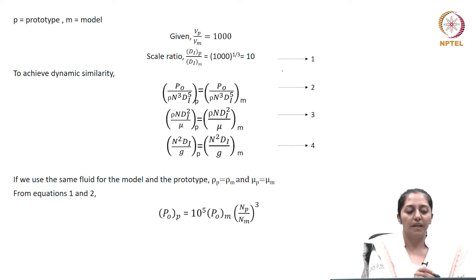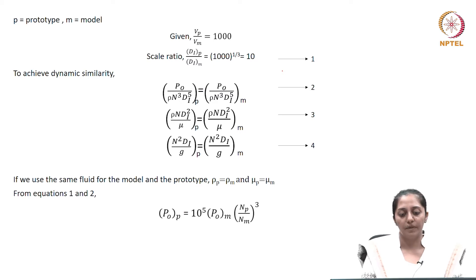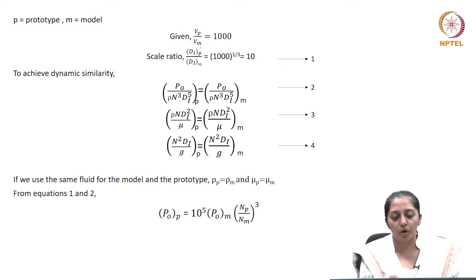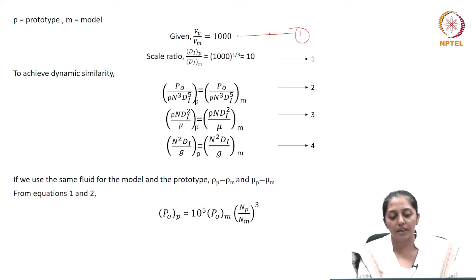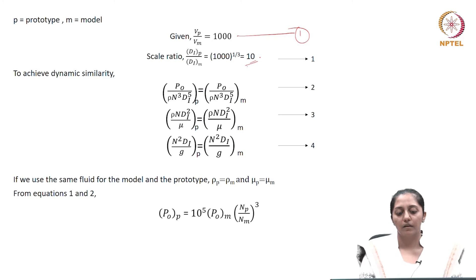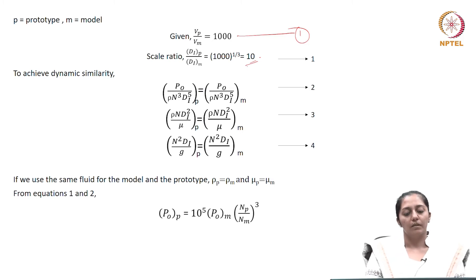We will mark P as the prototype and M as the model. The volume of the prototype to model is increasing by 1000 folds. This gives one correlation between the volumes at the two levels. The scale ratio, which is the ratio of the linear dimensions at the model and the prototype, would be the cube root of this, giving a factor of 10. So for the linear dimensions, the scale up ratio is 10.